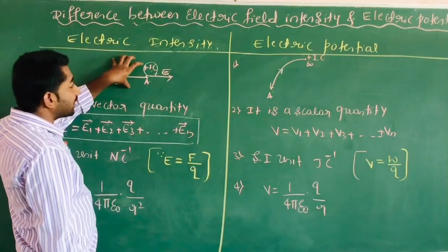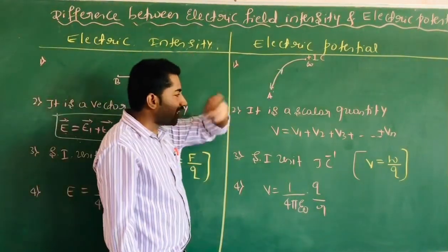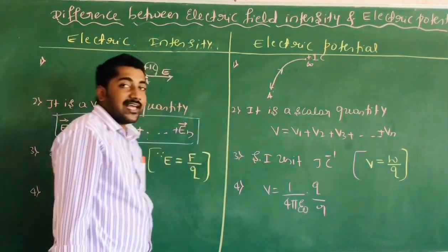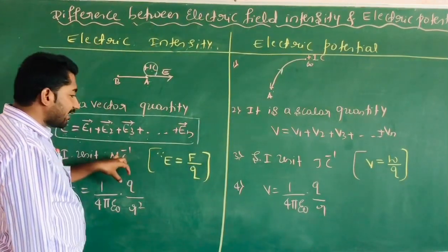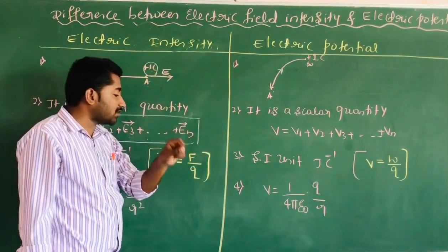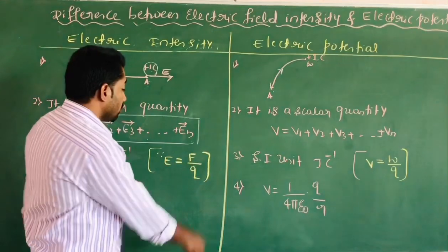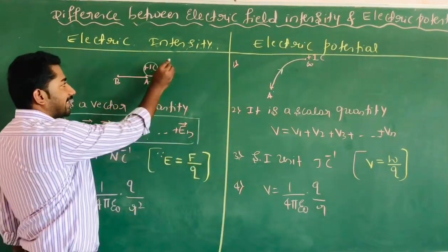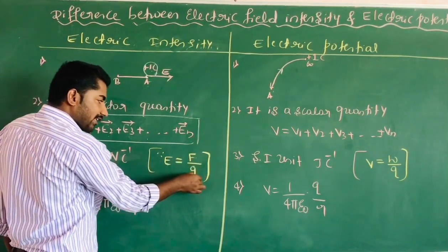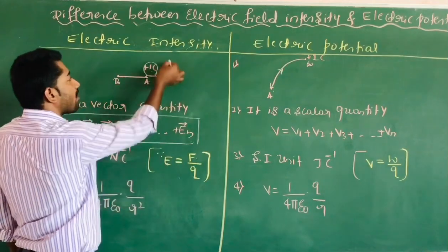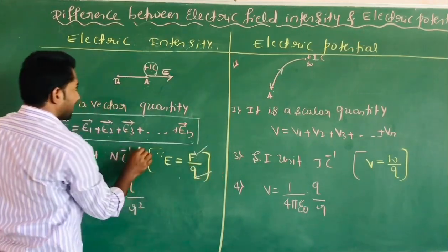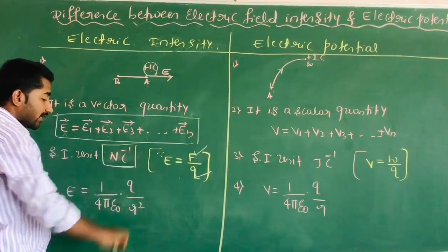The first difference is the definition of electric intensity and electric potential. Electric intensity is a vector quantity and electric potential is a scalar quantity. Electric intensity E is equal to F divided by q, force per unit charge. The SI unit of force is Newton and the SI unit of charge is Coulomb, so the SI unit of electric intensity is Newton per Coulomb.